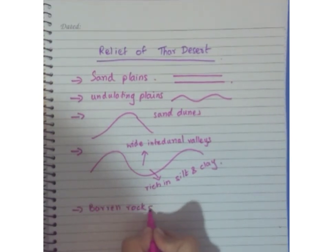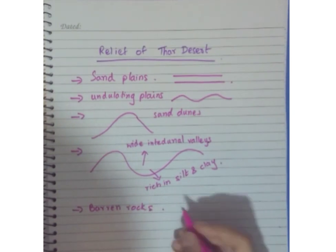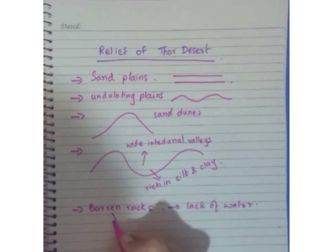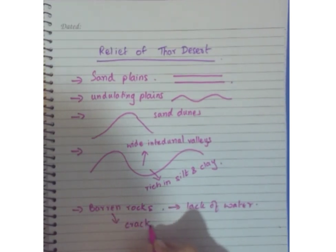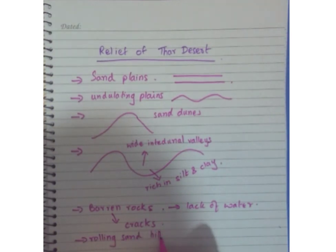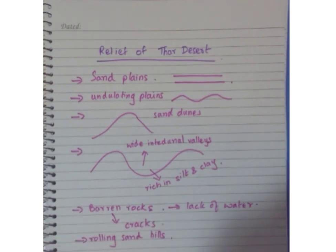Usually there are barren rocks with no vegetation and no trees, and a lack of water causes those rocks to crack. Rolling sand hills are another main feature of the desert area.